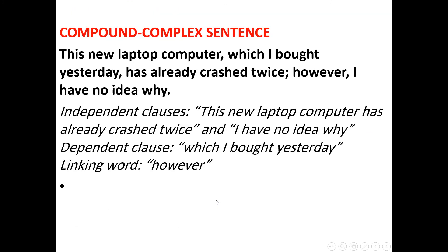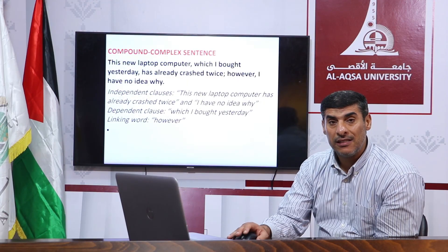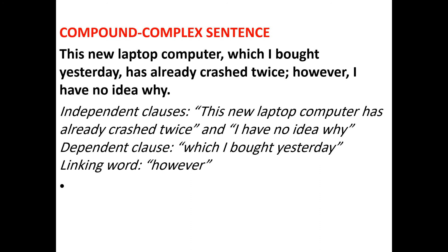This new laptop computer, which I bought yesterday, has already crashed twice; however, I have no idea why. 'Which I bought yesterday' is a subordinate — an adjective or relative clause — that doesn't carry the whole meaning. 'This new laptop computer has already crashed twice' is the independent clause. We insert the relative or dependent clause between the parts of the main clause. 'And I have no idea why' — adding 'however' makes it a compound complex sentence. The linking word is 'however.' You can also say: this new laptop computer has already crashed twice, and I have no idea why — that is a compound sentence, but when we add 'which I bought yesterday,' it becomes compound complex.